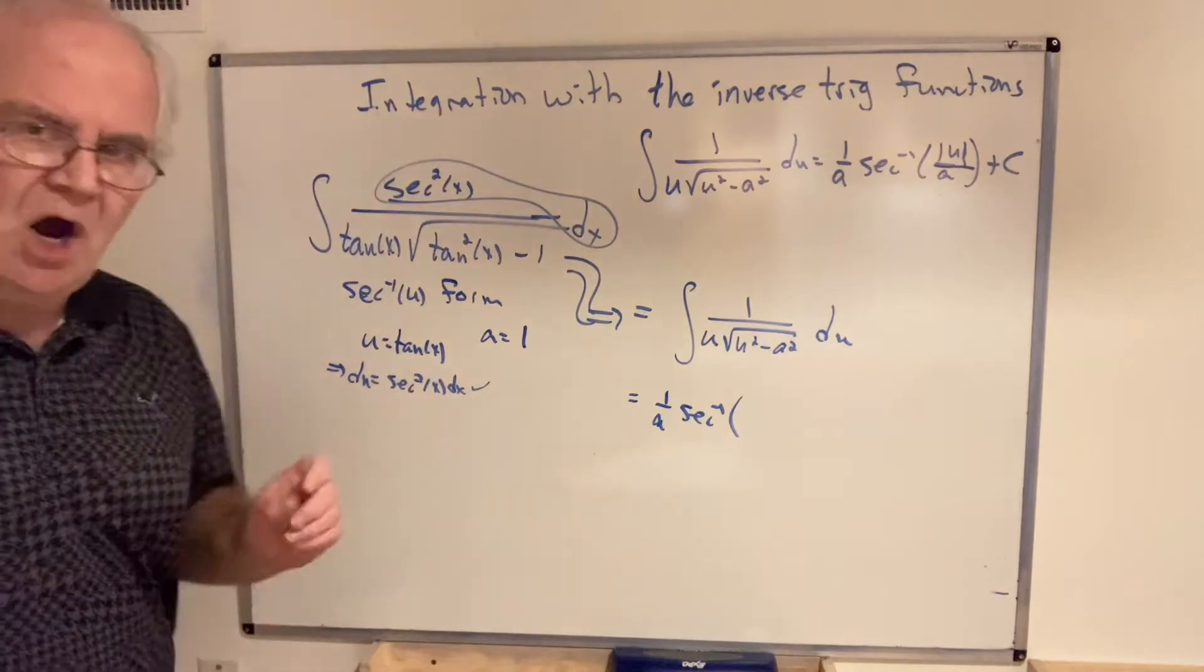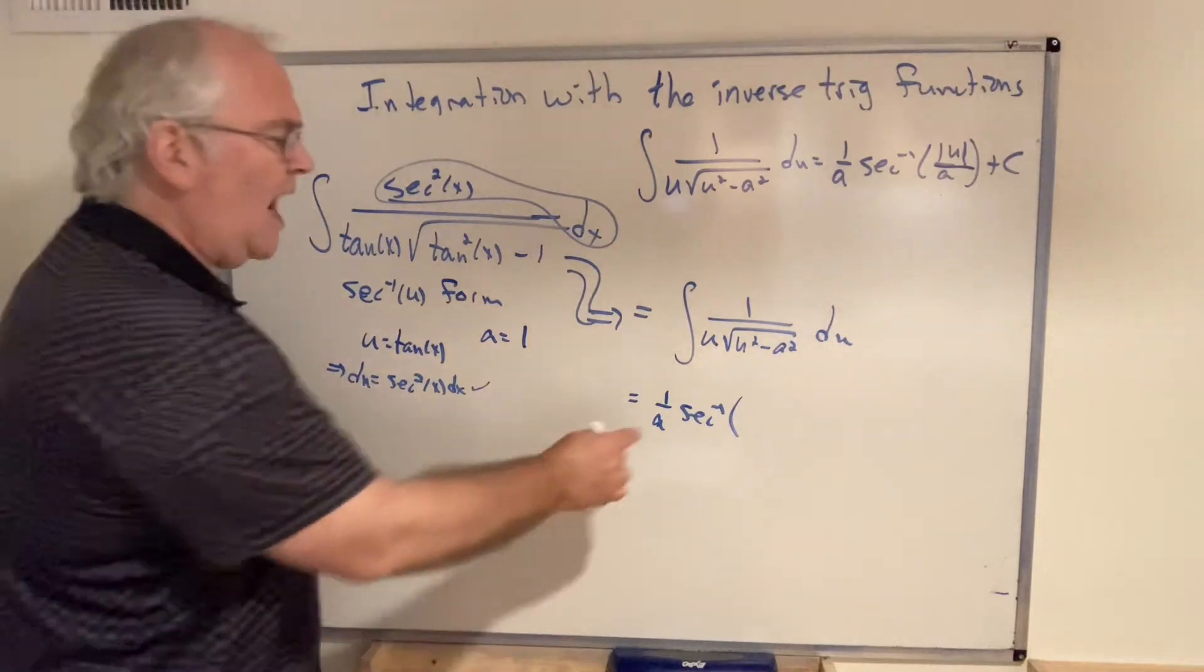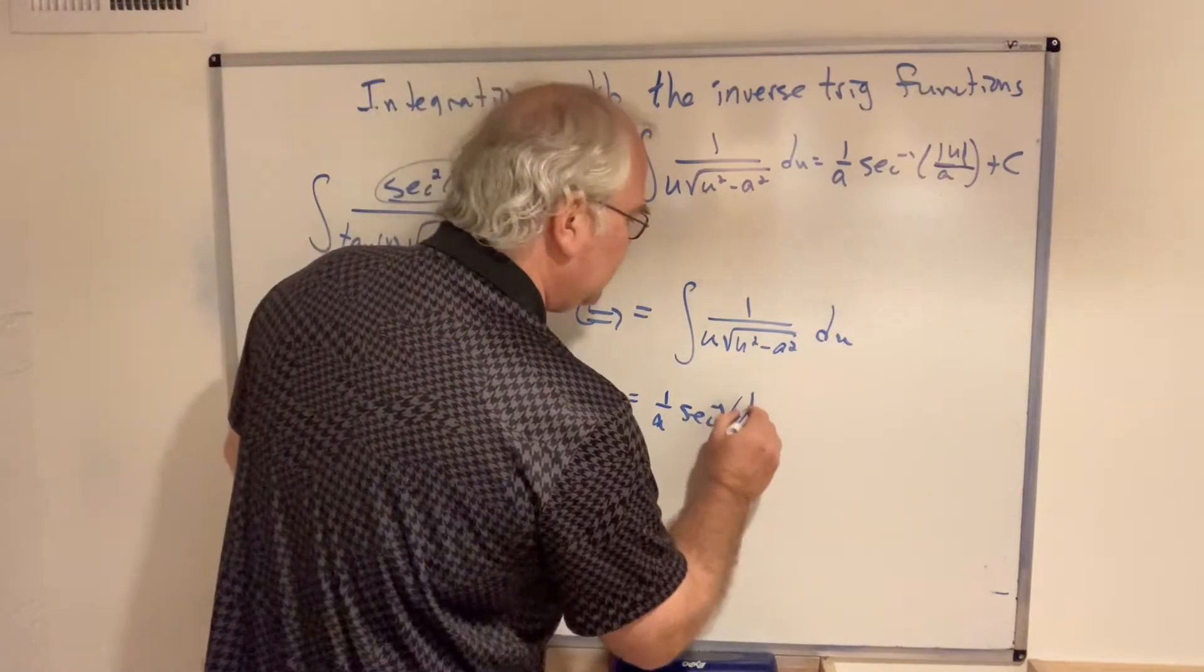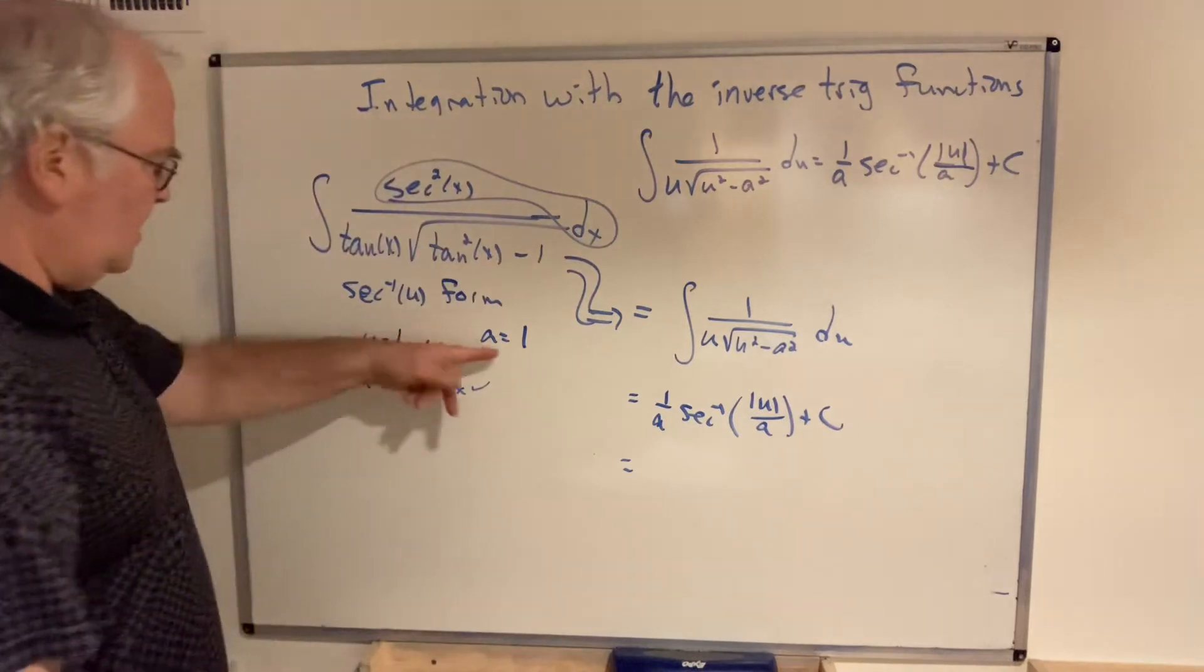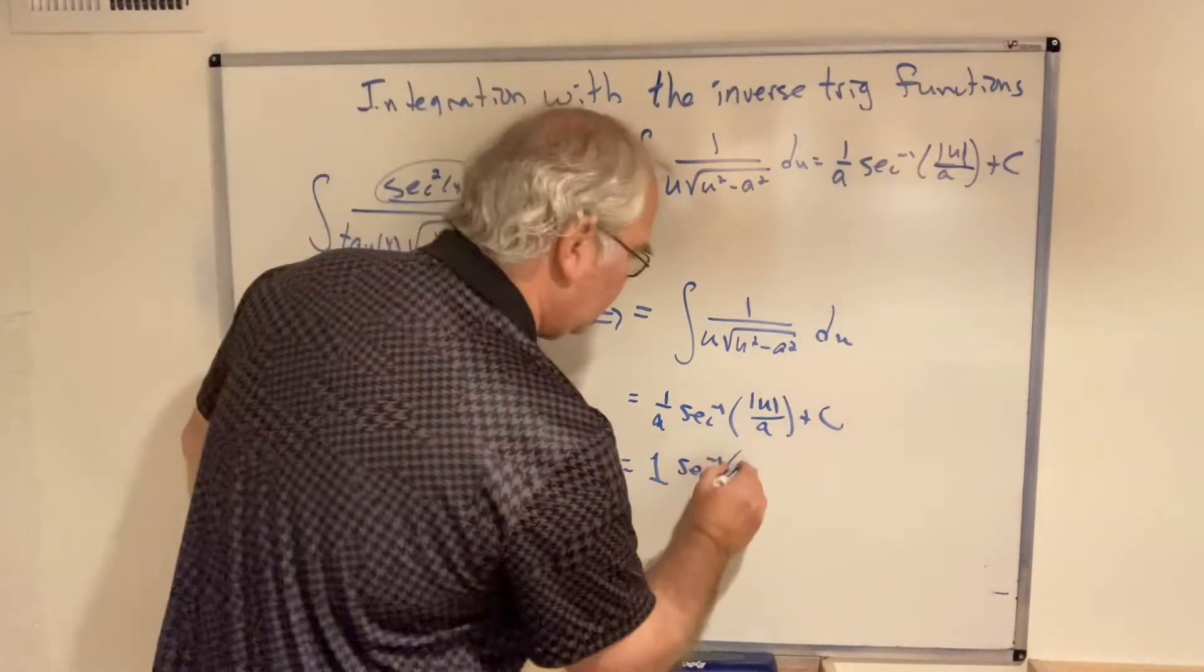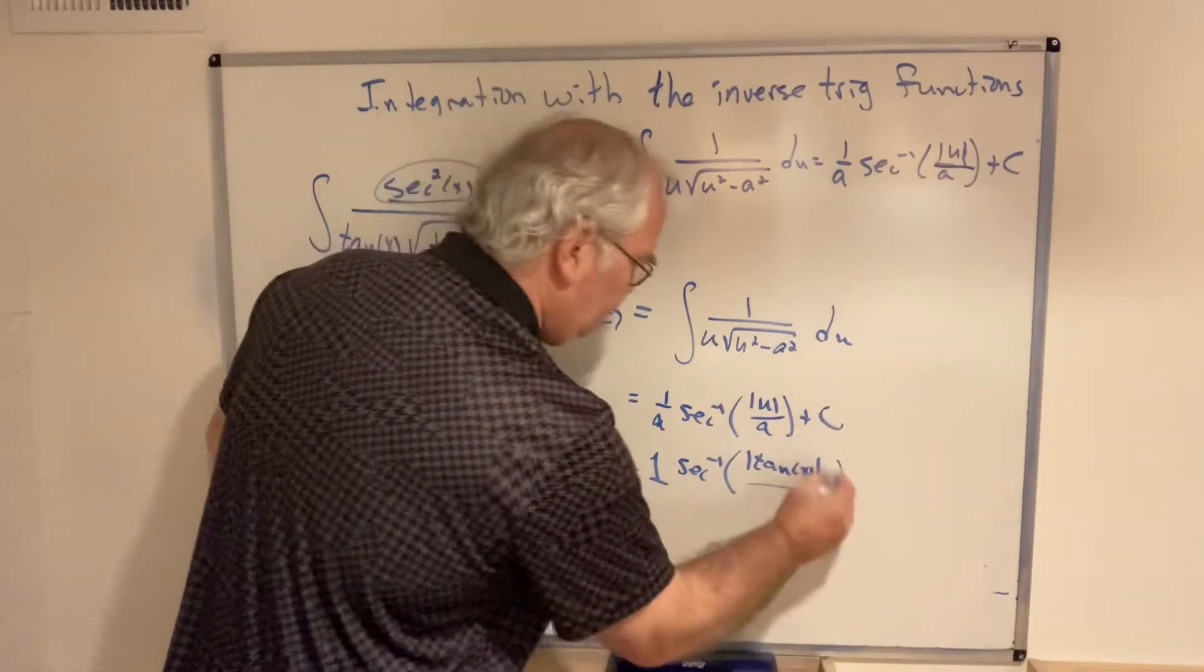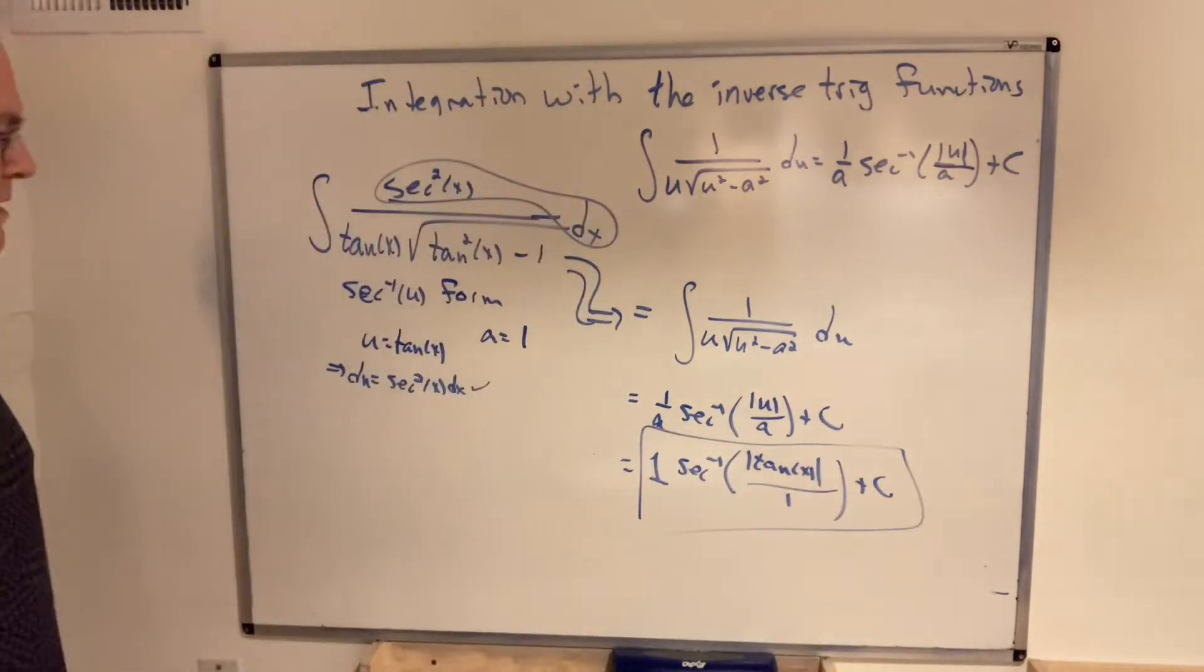If you prefer writing arc sine, arc tangent, arc secant, I don't care about that. That's fine. I will typically write secant inverse form, tangent inverse and sine inverse. This is absolute u over a plus the constant. And then fill in the details. a is 1 so we can simply write 1. Secant inverse of absolute u is absolute tangent. And I'm just going to put over 1 just to fill it in. And we're out. So that's our first little example of secant inverse form.